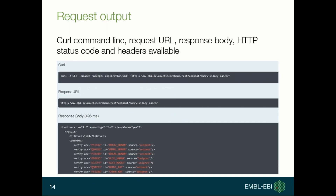This is an example of a request output. As you can see, you can learn how to make a call with the cURL command line. There's a request URL so you can try it with your browser or other tools. You can also find HTTP response headers, HTTP status code, and the response body.